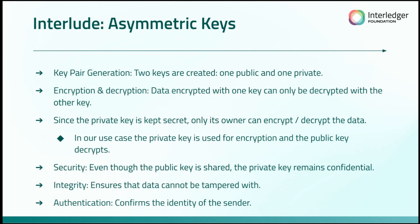We need to understand asymmetric keys. When you have key pair generation, two keys are generated: one is public — anyone can have it — and the other is private, which must never be shared under any circumstances. The idea is around encryption and decryption: data encrypted with one key can only be decrypted with the other. Since the private key is kept secret, only the owner can encrypt or decrypt the data. In our case, the private key is used for encryption and the public key is used for decryption. Even though the public key is widely shared, the private key remains confidential, ensuring integrity that data cannot be tampered with.